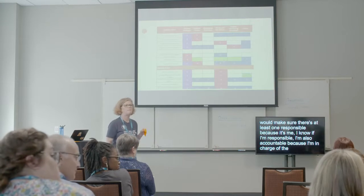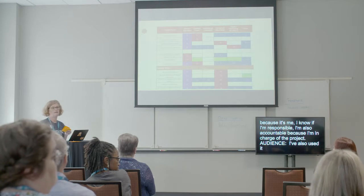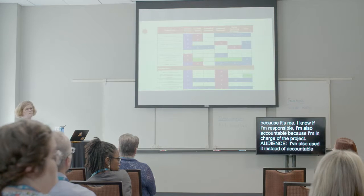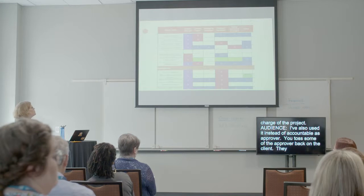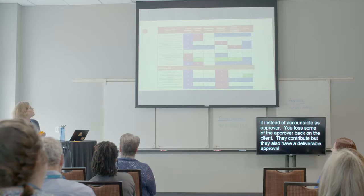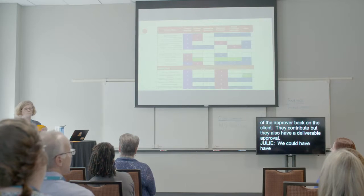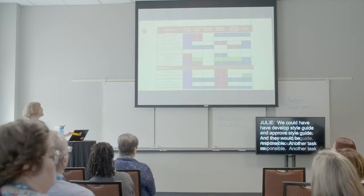I've also used the VA instead of accountable as approver. Approver, okay. So then you toss some of the approver back on the client. They contribute, but they also have a deliverable approval. Well, and I think you could also do develop, like we have develop style guide, approve style guide. And then they would be responsible. So you just add another task as well. But that's a good idea.